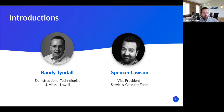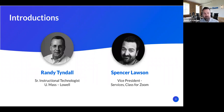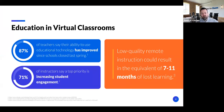We've learned that 87% of educators say their ability to use educational technology has improved since schools started closing last spring. But 71% of instructors still say that increasing student engagement is a top priority. The biggest threat is that low-quality remote instruction could lead to seven to eleven months of lost learning. We're seeing students failing at record rates in K-12 — students are struggling in this online world.